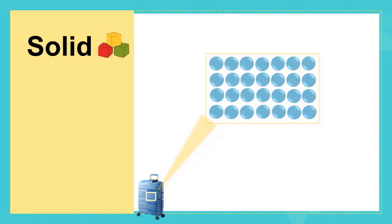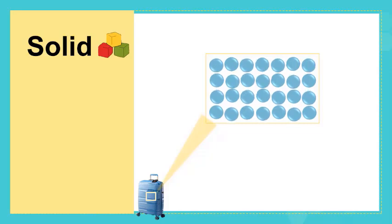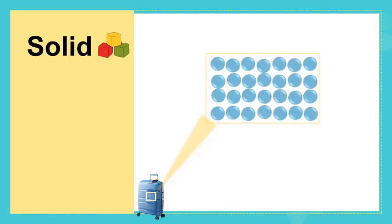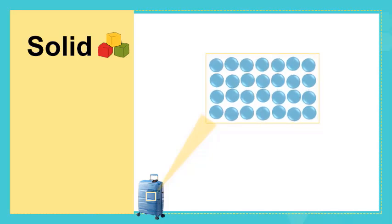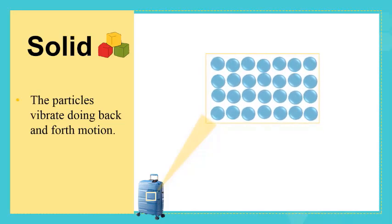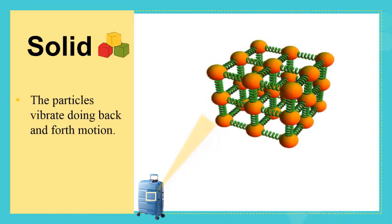Now you remember that we said before that particles are continuously moving. But how can the particles of solid move while they are very close to each other and tightly packed? As you see, the particles of the solid vibrate backward and forward all the time. So we say that they vibrate doing back and forth motion. These particles move by keeping the same position and the same distance between one another.